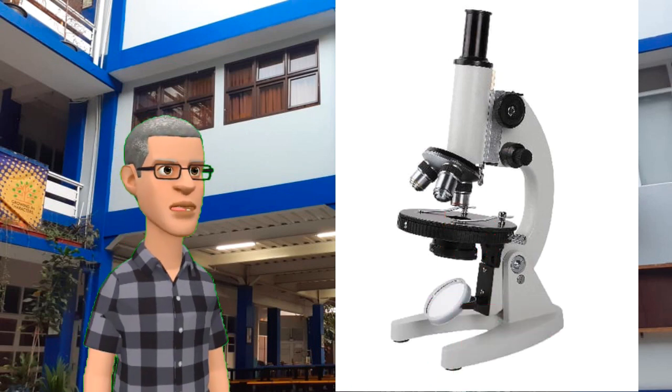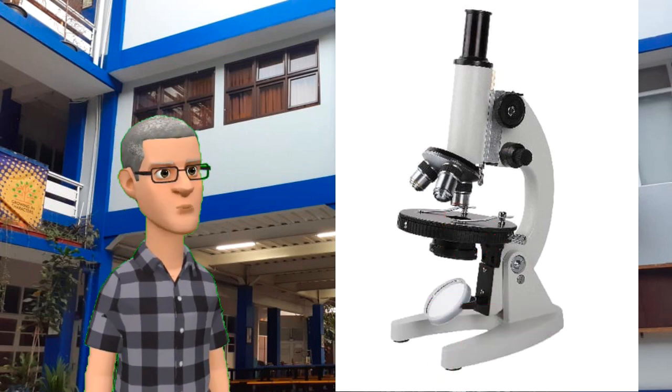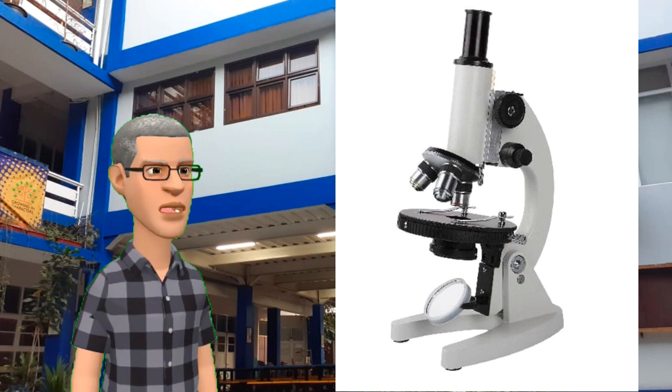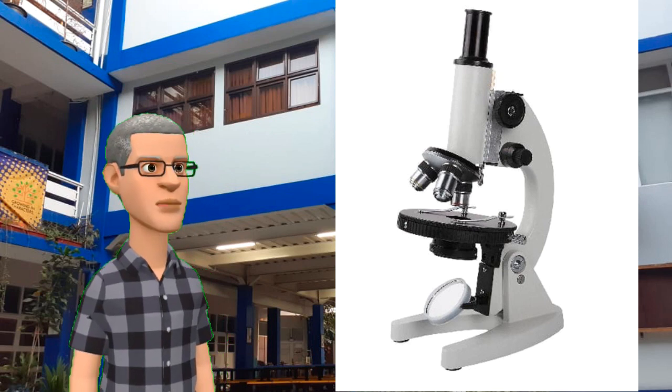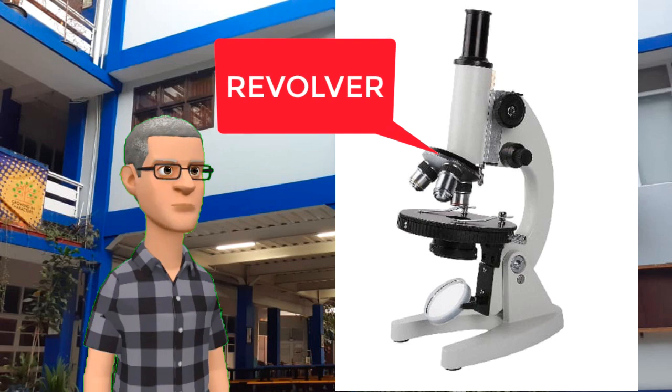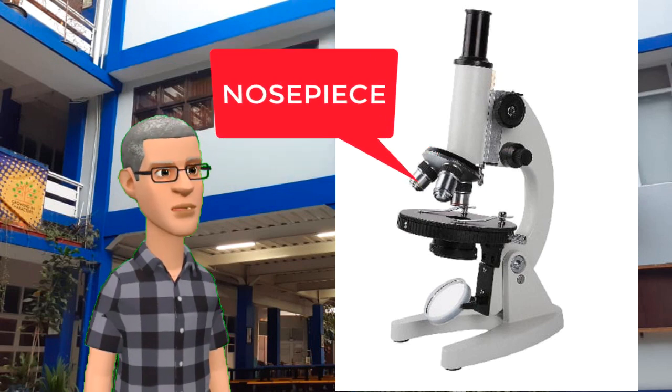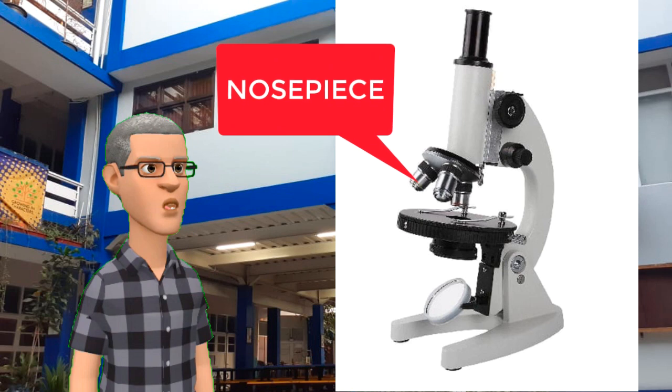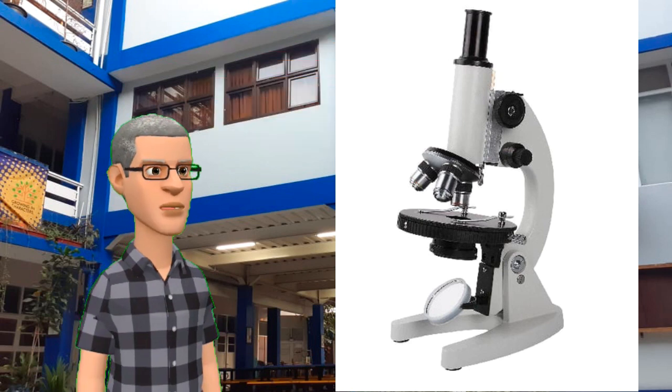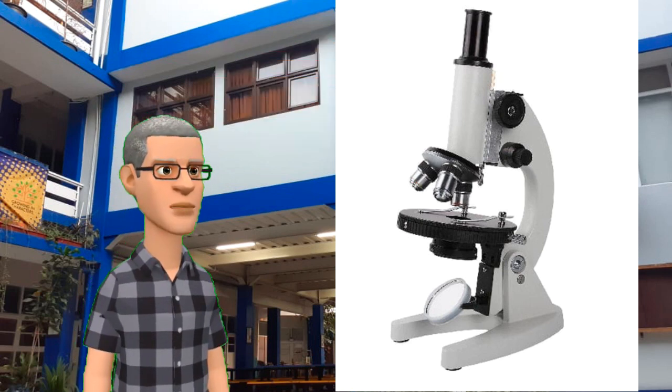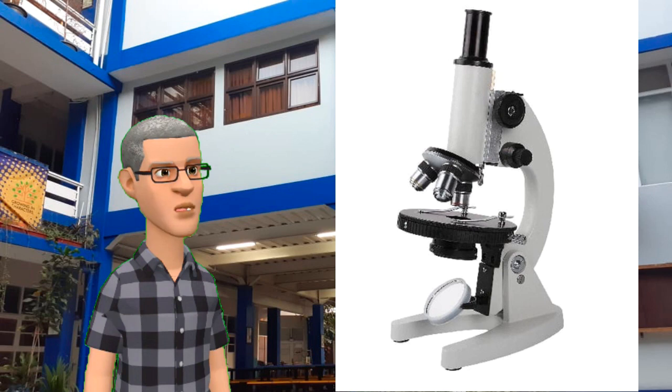When we are observing an object, we can select the objective lens we are using by turning or rotating the revolver. Objective lenses are located in the nose piece. The commonly used objective lenses are 4x, 10x, 40x, and 100x.